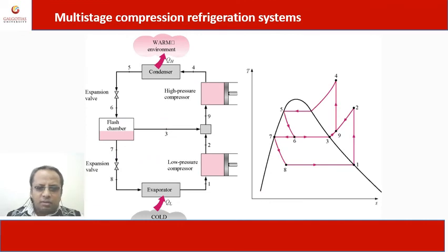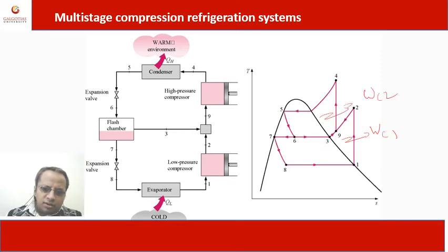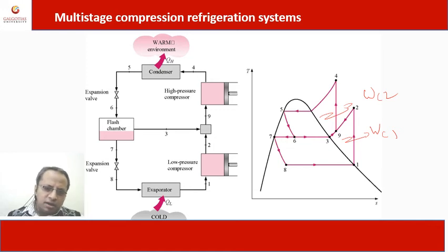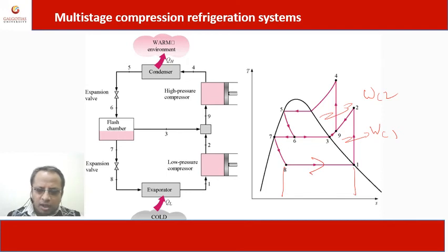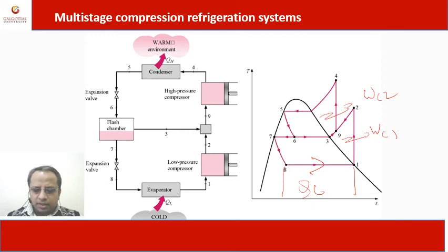Through the TS plot, we can see compression work 1 and the other compressor work. The disadvantage of this system is the cost, because two compressors have higher cost and consume more work. But our achievement is the cooling effect — we achieve more cooling effect by using this staging of the compressor. For low temperature requirements, we follow the cascading multi-stage compression refrigeration system.